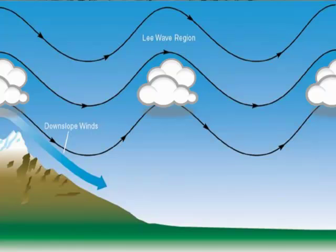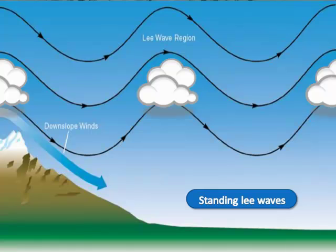Given that the mountains producing the waves are stationary, the waves are also stationary, so these are also referred to as standing lee waves.